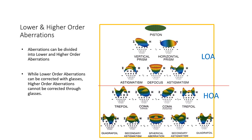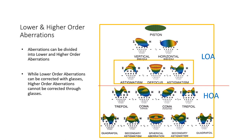When we talk of aberrations in the eye, there are lower order refractive errors and higher order aberrations. The red line separates the lower order aberrations from the higher order aberrations. Today we are going to speak about the second order aberrations in the Zernike polynomials — specifically astigmatism, which is the second order aberration in the Zernike polynomials.